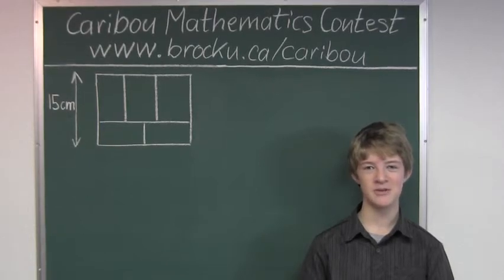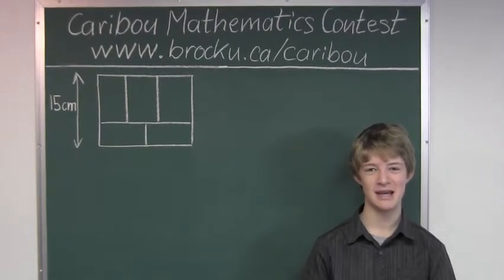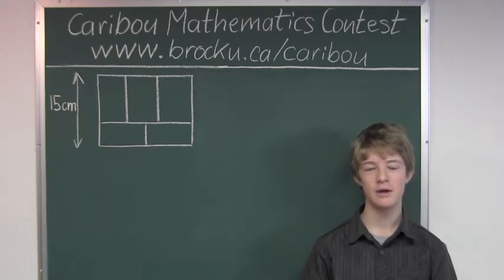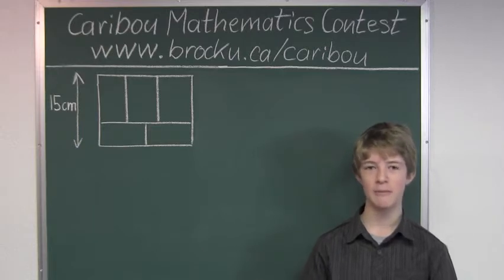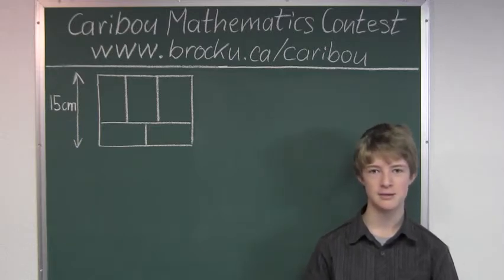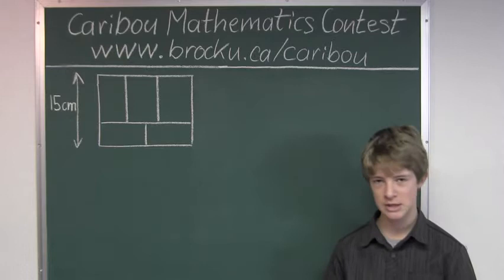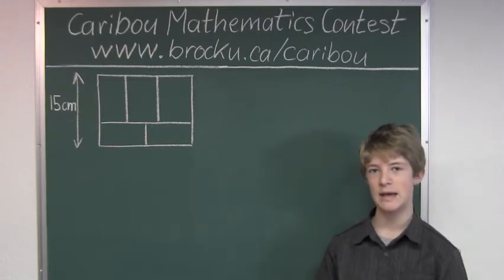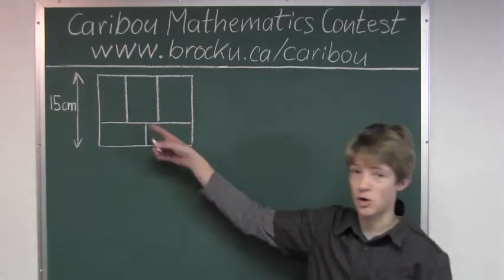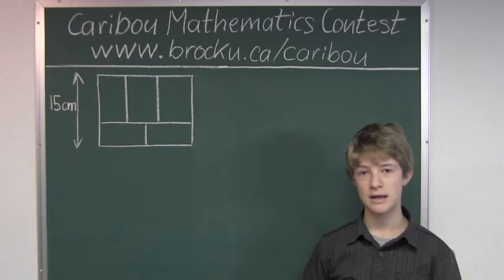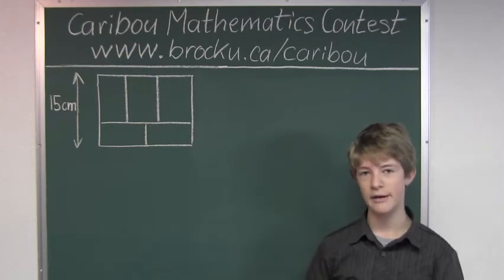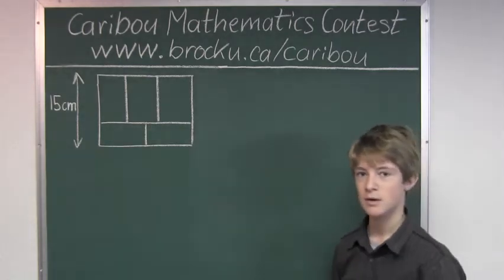Hi, this video is about the Caribou Mathematics Contest in Canada. I'm going to show the solution for the January 2012 grade 5-6 contest question 17, which also came up in the grade 7-8 contest. The question is: five identical rectangles fit together as shown. What, in centimeters squared, is the total area which they cover?